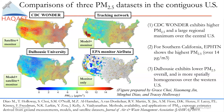Overall, the CDC WONDER exhibits higher PM2.5 and larger regional maxima over the central U.S. For Southern California, the tracking network shows much higher PM2.5, over 14 micrograms per cubic meter. The Dalhousie data exhibits lower PM2.5 overall and is more spatially homogeneous over the western U.S. As you can see, they are not always the same even during the same time period — and this is also a figure from the review article I mentioned.